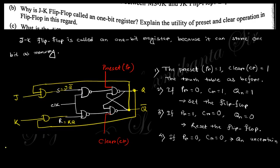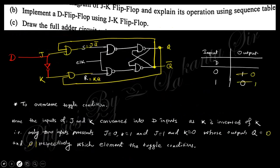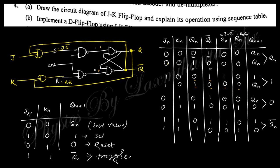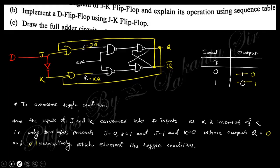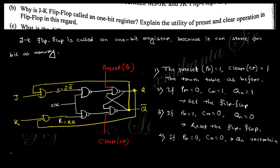The next question asks why a JK flip-flop is called a one-bit register. Within this JK flip-flop, a single-bit memory is used. You can see from the truth table of the JK flip-flop that when Jn=0 and Kn=0, the output is Qn — it stores the previous value. Because it stores the previous value, it is known as a one-bit register. A register means it has memory — it can store a value.